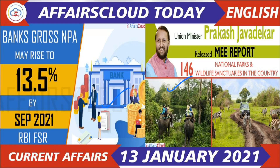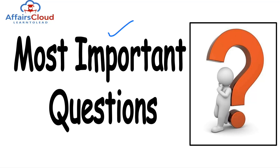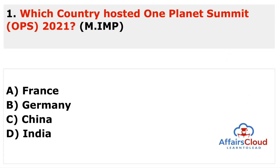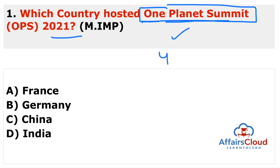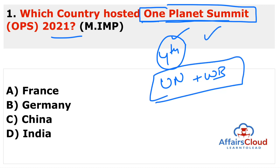Please like, share, and subscribe our channel. Now let's start 13th January 2021. Our first question: which country hosted the One Planet Summit 2021? The most important keyword is 'One Planet Summit.' This is the fourth One Planet Summit, organized by two famous organizations — the United Nations and the World Bank — to conserve and protect nature.